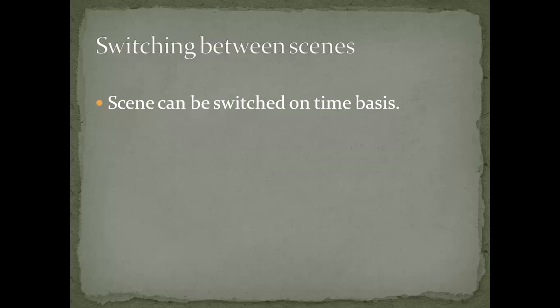Basically we have two methods for switching between scenes. The first one is that a scene can be switched on a time basis. Suppose we are in level 1 and we have coded in such a way that after 10 minutes of playing, the player will automatically switch to the next level or next scene. This type of switching is called switching on the basis of time.